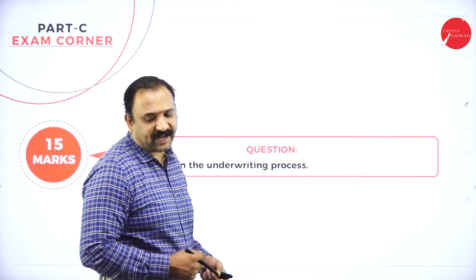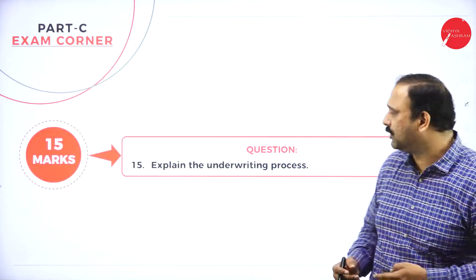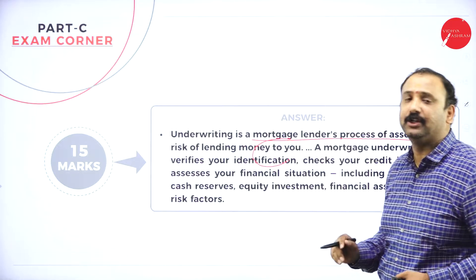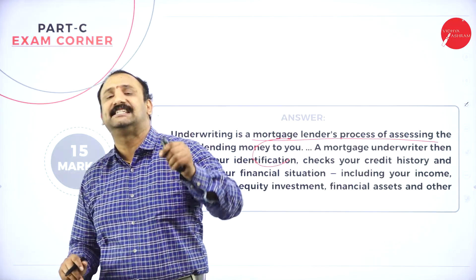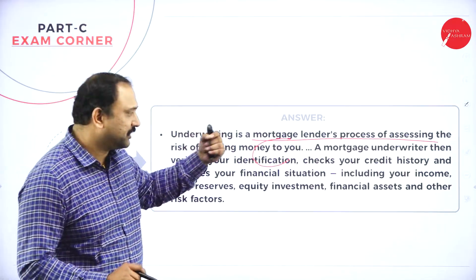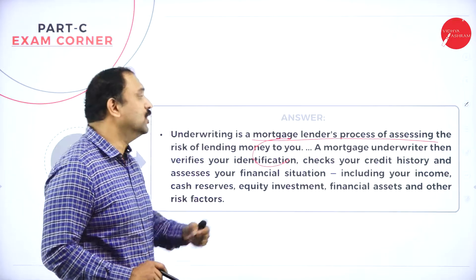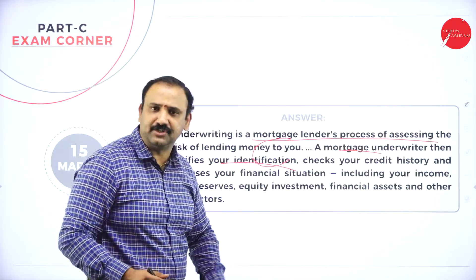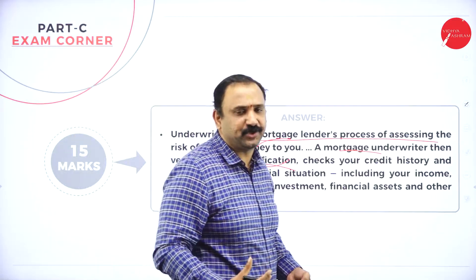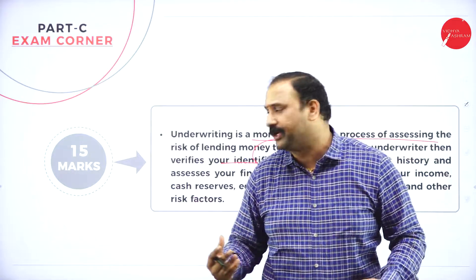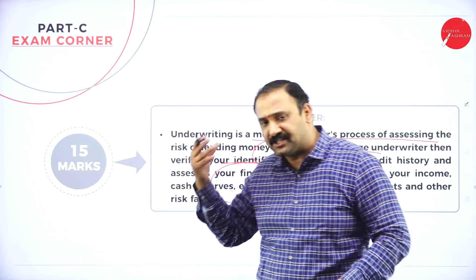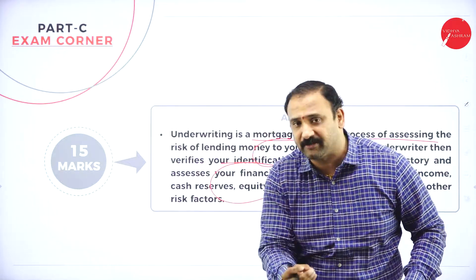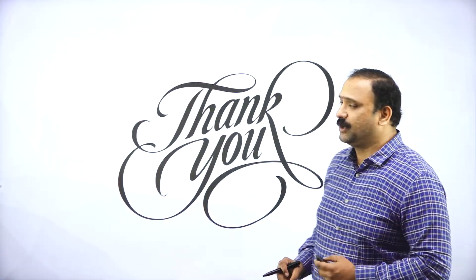The next question is: explain the underwriting process. Underwriting is a mortgage lender's process of assessing the risk of lending money to you. They will try to assess the risk involved in giving an insurance claim or benefit. When a policy is being decided, a mortgage underwriter will verify your identification, credit history, and financial situation. All financial assets will be valued and finally the underwriter will make a premium claim suited to you based on the type of insurance taken.